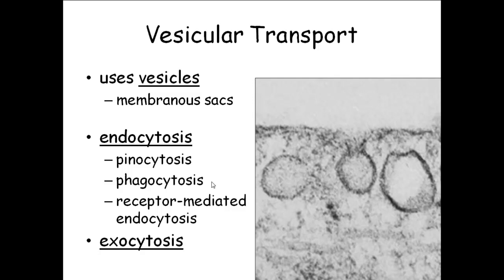What non-specific means is the cell just gets whatever is out there — it's not looking for something in particular. Whatever happens to be dissolved in the fluid is what it gets in pinocytosis; whatever particulate matter is out there is what it's eating in phagocytosis. If the cell is looking for something specific — some particular amino acid or carbohydrate or other particular substance — then the cell uses what's called receptor-mediated endocytosis.